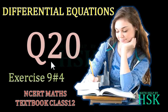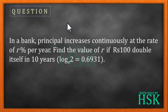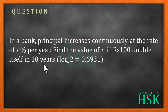In this video I am going to take question number 20 of exercise 9.4 from the chapter differential equations of NCERT maths textbook class 12. The question is: in a bank, principal increases continuously at a rate of r percent per year. Find the value of r if rupees 100 doubles itself in 10 years. We are also given that log 2 (base e) is equal to 0.6931.